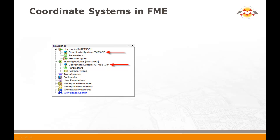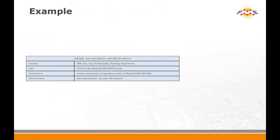In FME, reprojection occurs at the end of a translation, whenever the coordinate system of the incoming data differs from the coordinate system requested for the output. Coordinate systems are selected through parameters in the Workbench Navigator window. To demonstrate how to reproject data, I'll use the basic scenario where we have a set of files in MapInfo MIF format and wish to reproject them to a different coordinate system. The workspace will read and write the same format of data — it's solely a data transformation process, and no translation of format will take place. This is a common scenario for many users of FME.